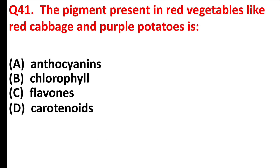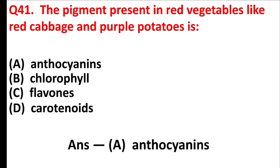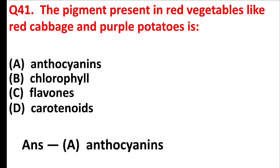The pigment present in red vegetables like red cabbage and purple potatoes is — Answer is Option A: Anthocyanins.